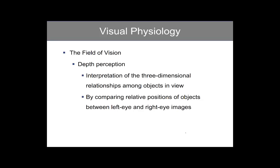Depth perception is an interpretation of the three-dimensional relationships among objects in view. The brain handles depth perception by comparing the relative positions of objects between the left and right eye images. Individuals with impairments in one or both eyes may have difficulty with depth perception.